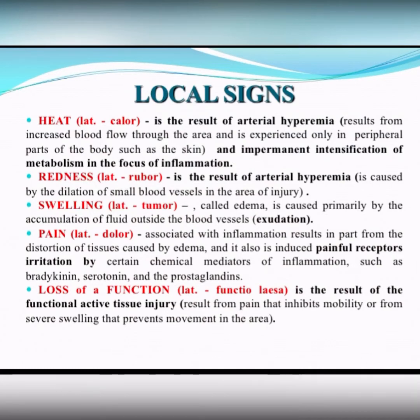The next local sign is redness, rubor, which is also the result of arterial hyperemia and is caused by the dilatation of small blood vessels in the area of injury.